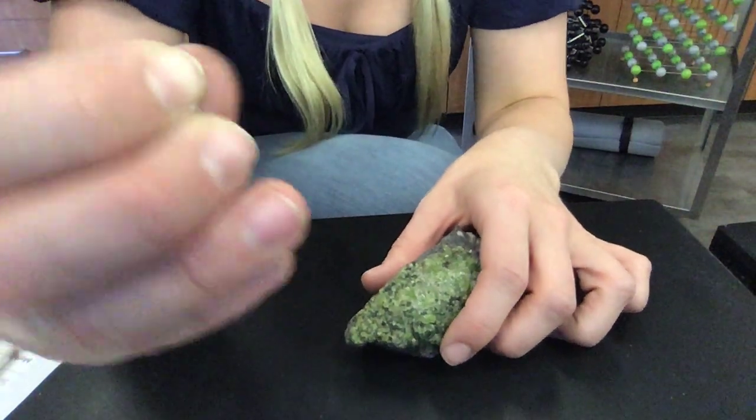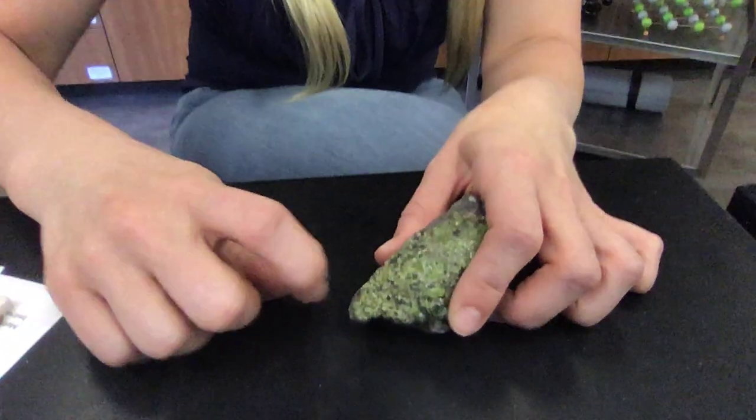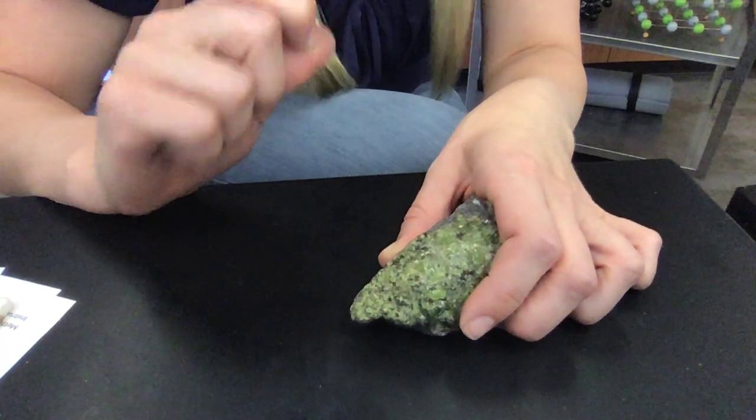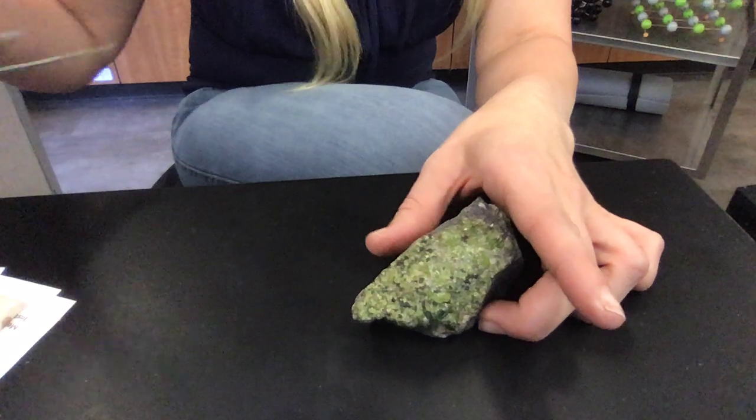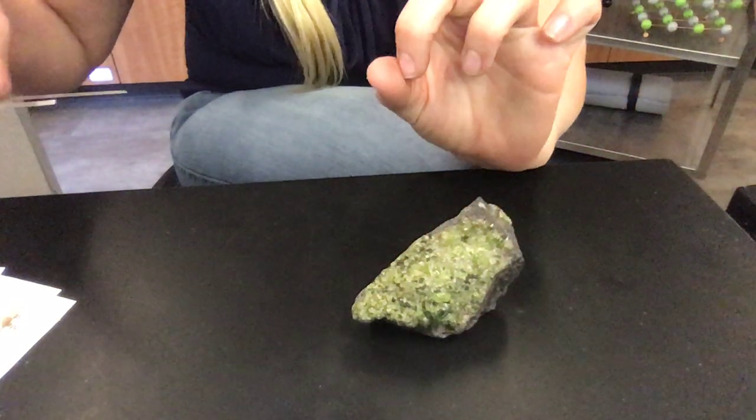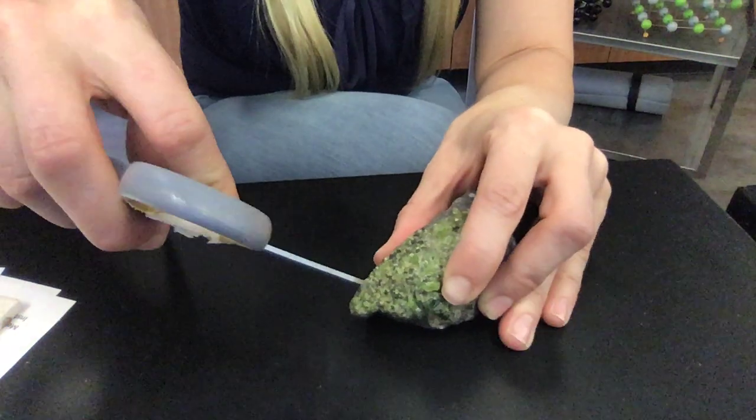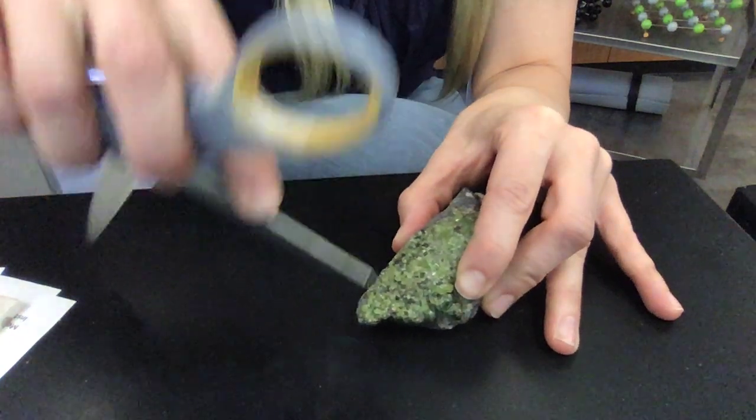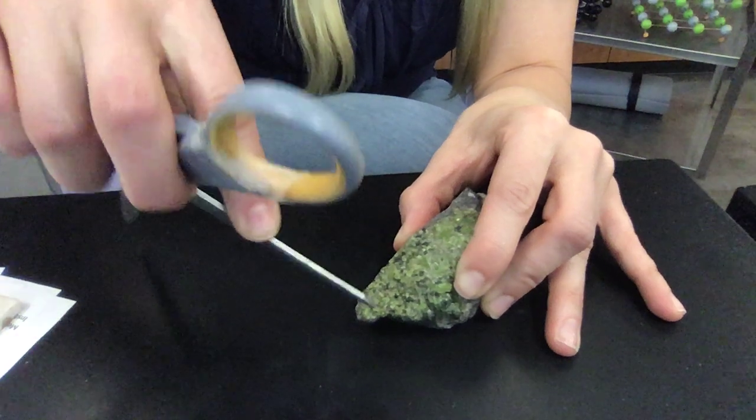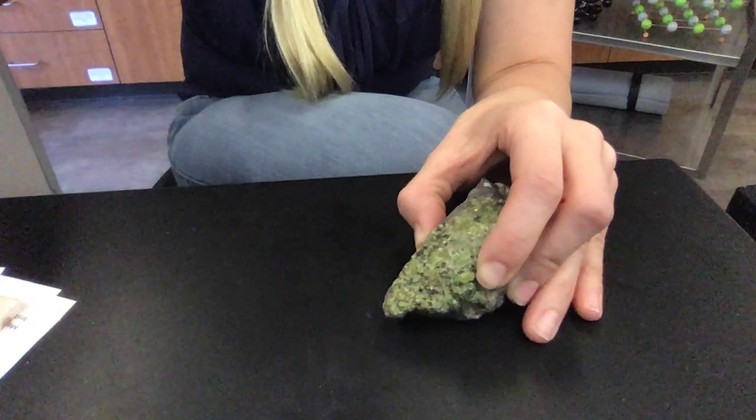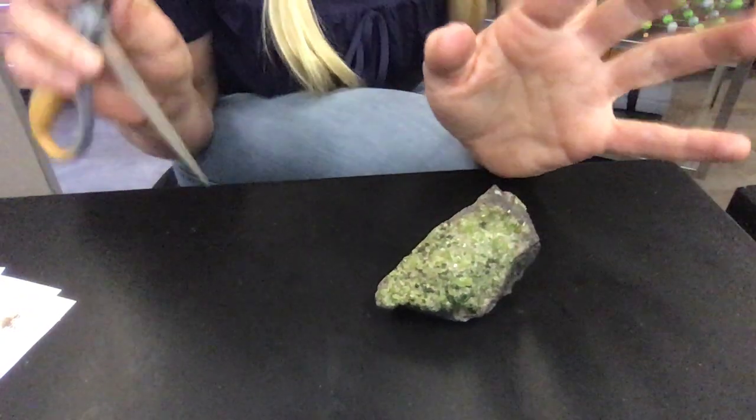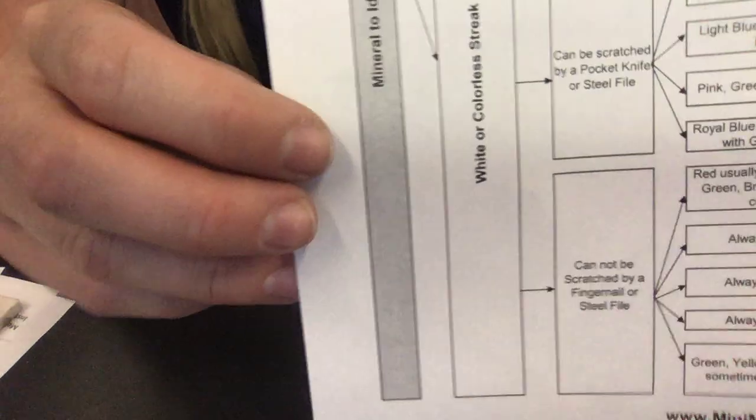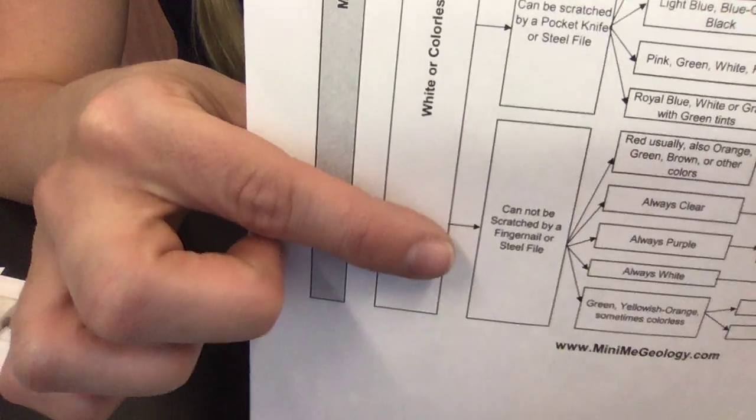And our first category was if it can be scratched by a fingernail. I don't have much nails to speak of, but let me see if I can't scratch this. No, that actually kind of hurt and I didn't scratch it. So the next one is if it can be scratched by a pocket knife, but not a fingernail. And so it was saying a steel blade. So I'm using a steel scissors and I am going and there is no powder being produced, meaning it is not being scratched. So this specimen cannot be scratched by steel or a fingernail.